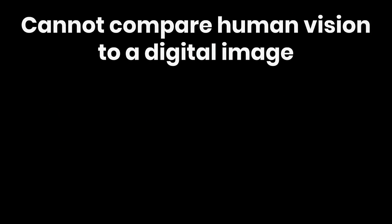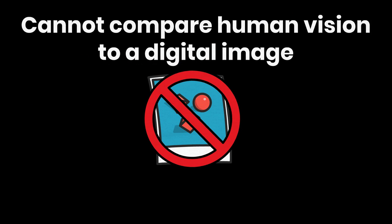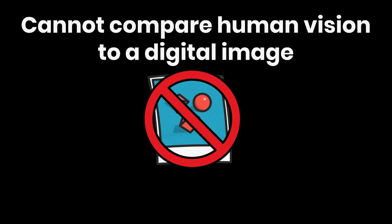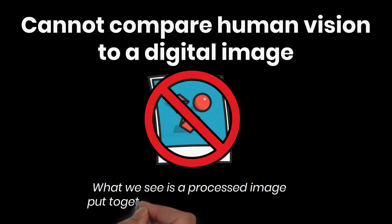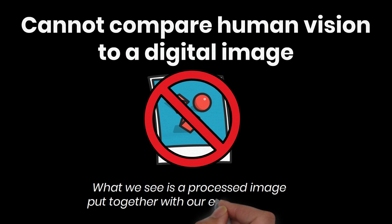So, in conclusion, you simply cannot compare human vision to a digital image, as the human eye does not contain pixels. Our visual system is different to that of a camera. As humans, what we see is a picture which we put together with our eyes and brain, and this is not necessarily the reality.